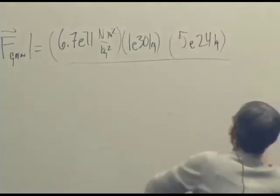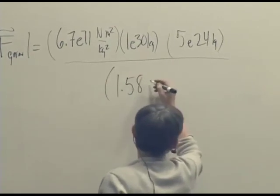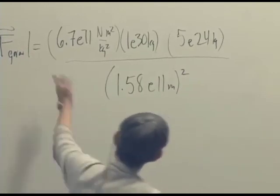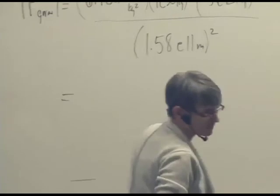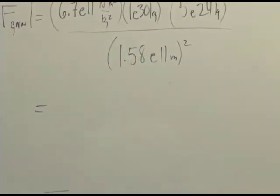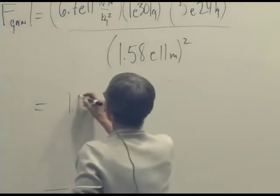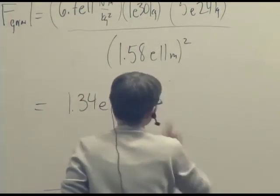And now we need the magnitude of R, which you calculated. So that's 1.58 times 10 to the 11th meters squared. And that's the magnitude. Everything's positive, so it's going to be a positive number. And that comes out to 1.34 times 10 to the 22 Newtons.